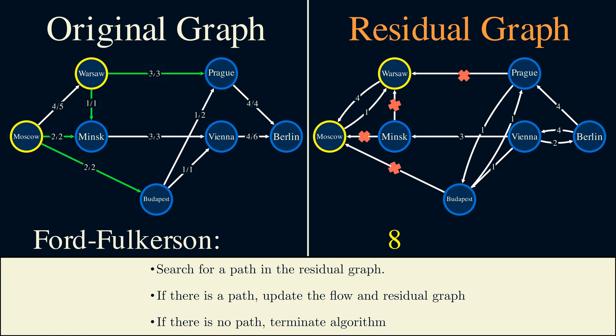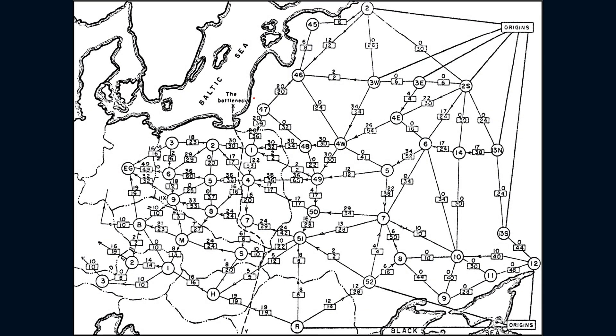These green edges form a bottleneck. This is what's preventing Moscow from sending more trains to Berlin. Finding this bottleneck is what the US Air Force actually cared about. They weren't actually trying to help the Soviets improve their rail network. They were much more interested in understanding which parts of the rail network to bomb in order to prevent the Soviets from sending reinforcements to East Germany.